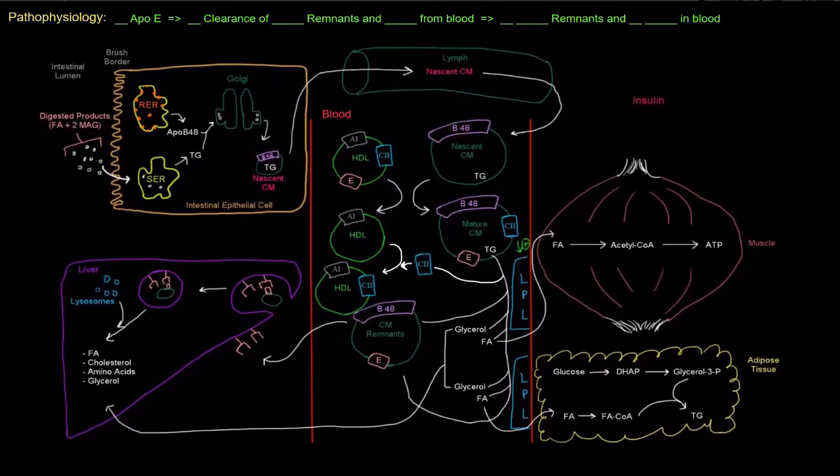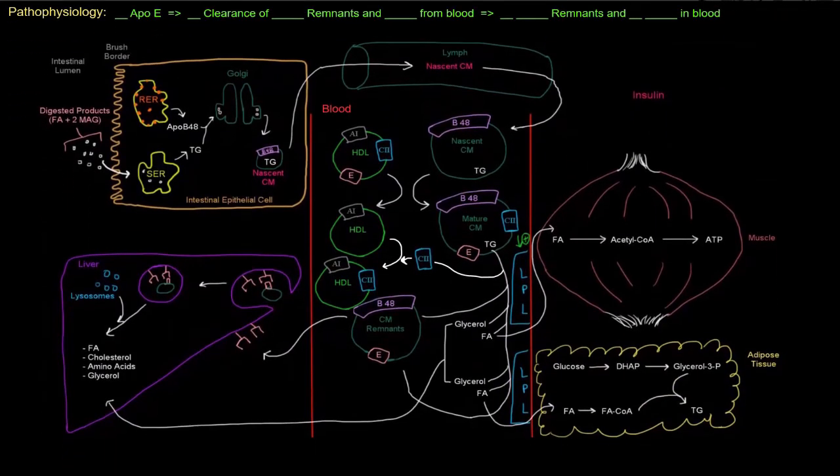As far as the pathophysiology goes, if there's less apoprotein E, that means there's going to be less clearance of the chylomicron remnants and IDL from the blood. So those will build up in the blood - increased chylomicron remnants and increased IDL in the blood.